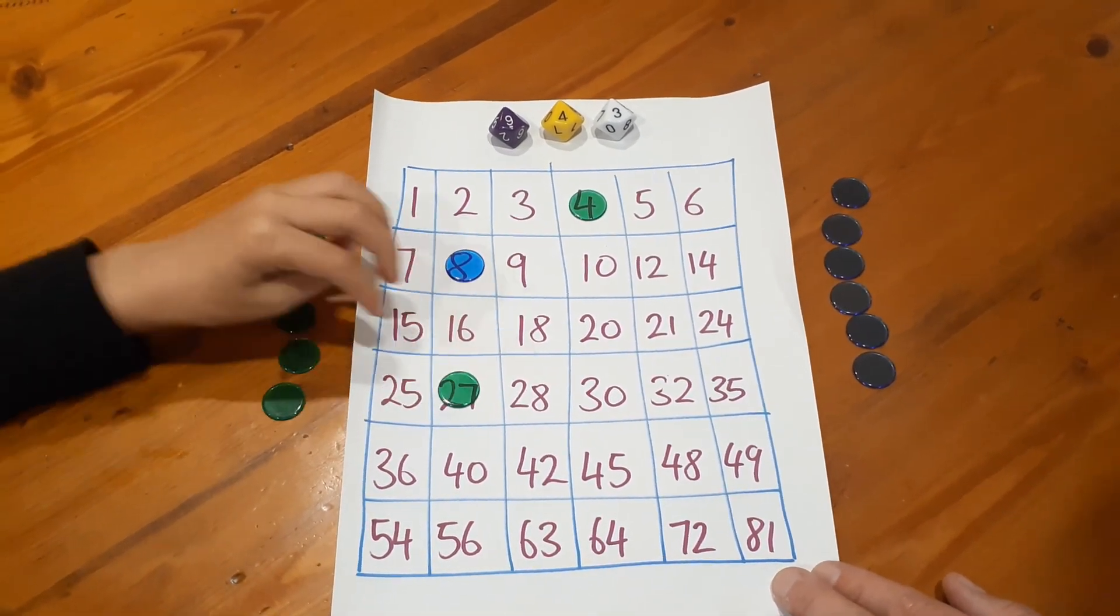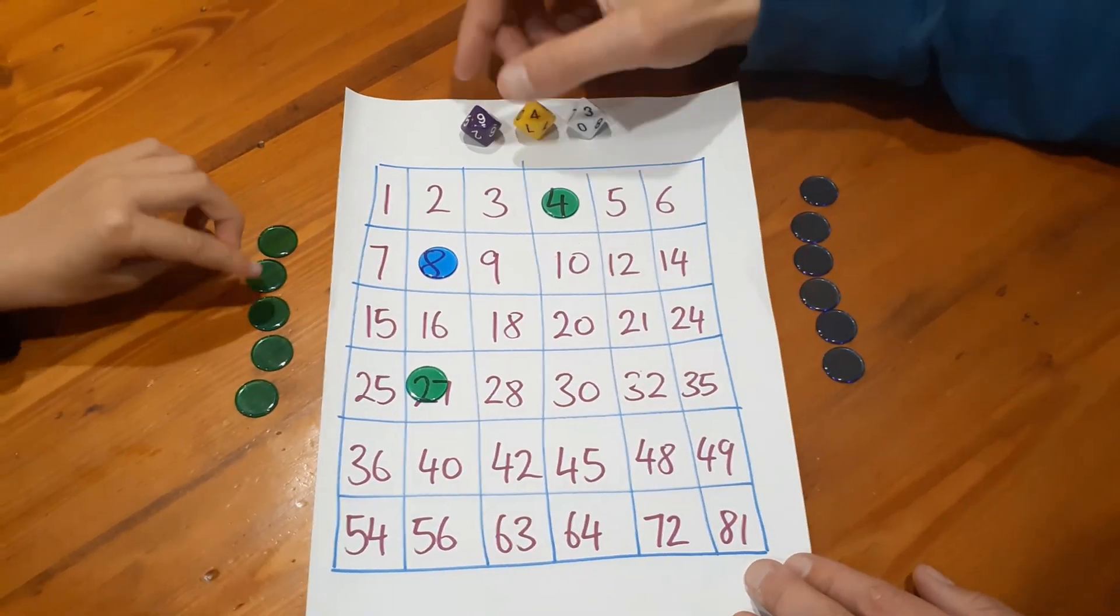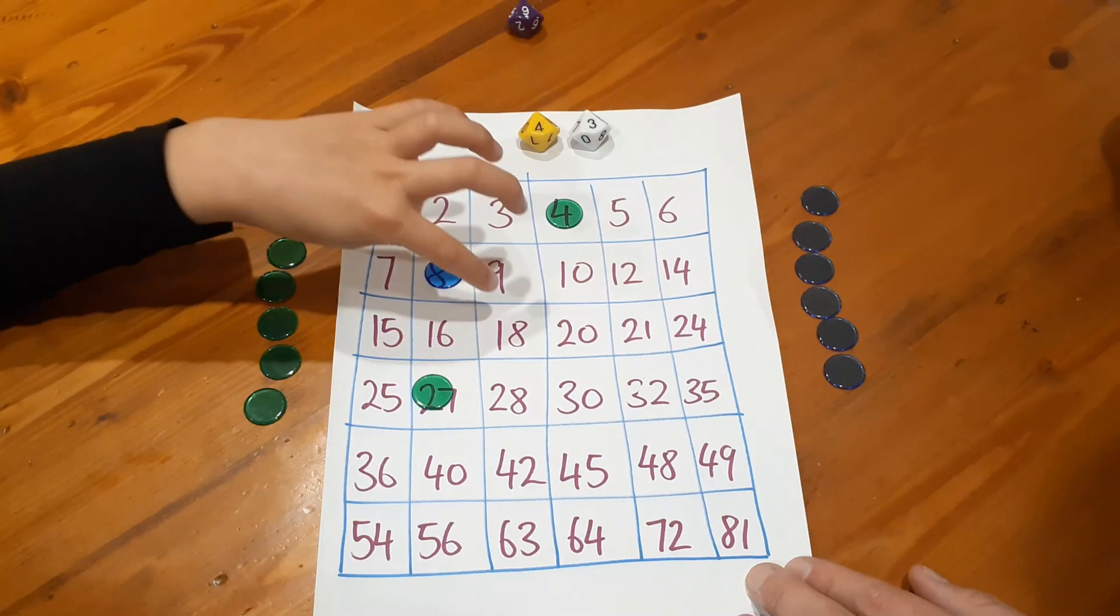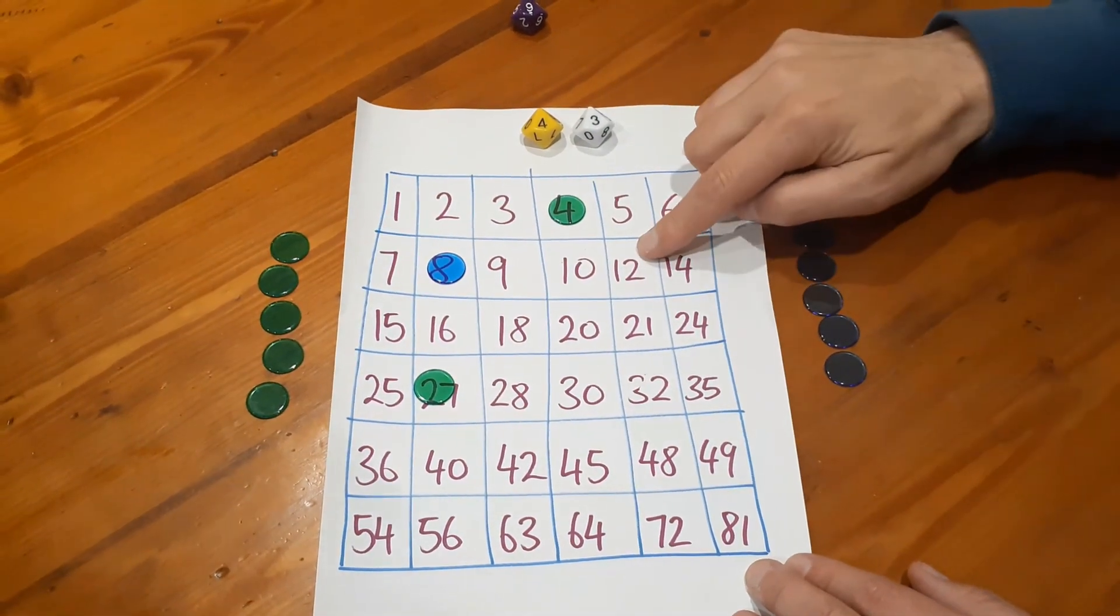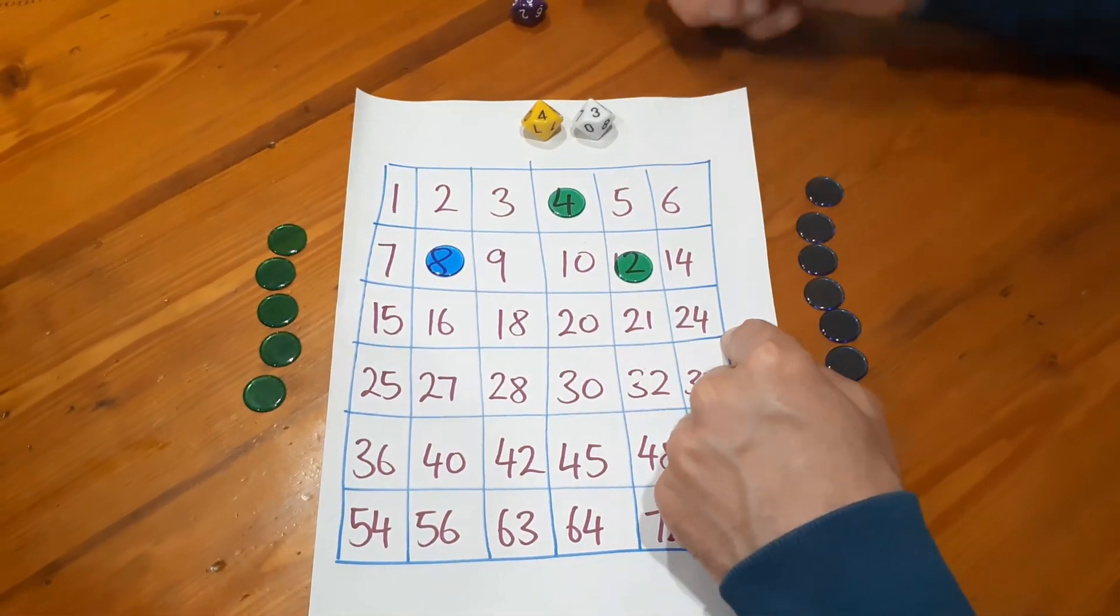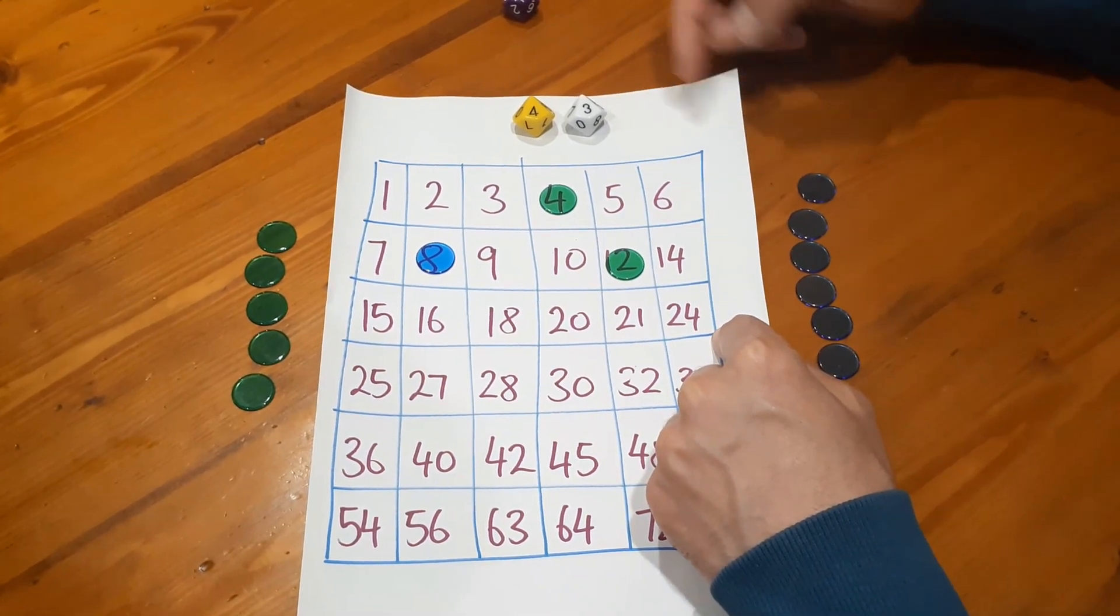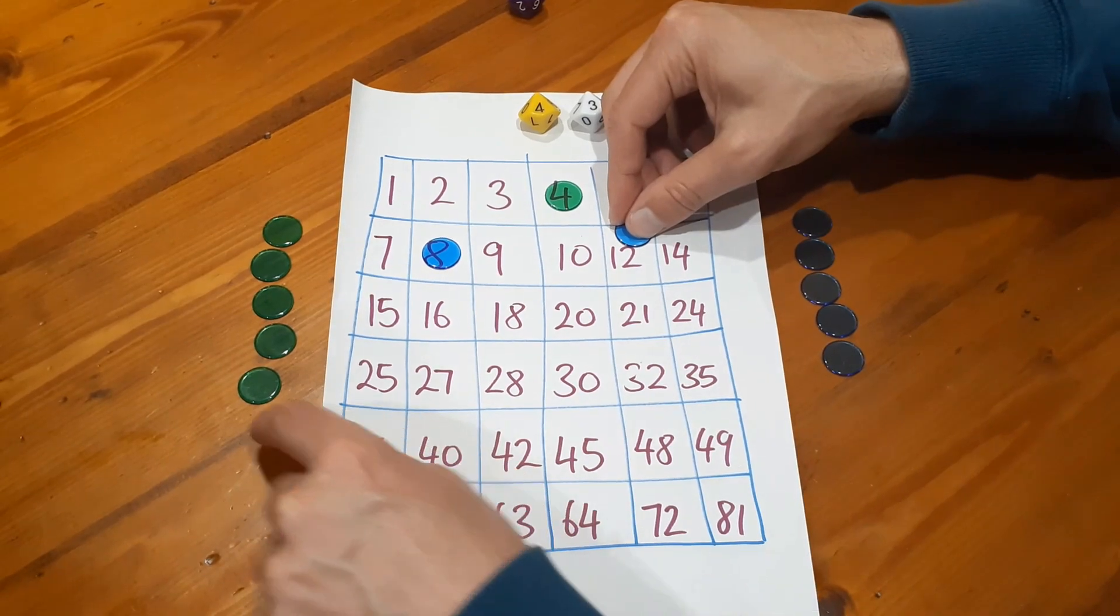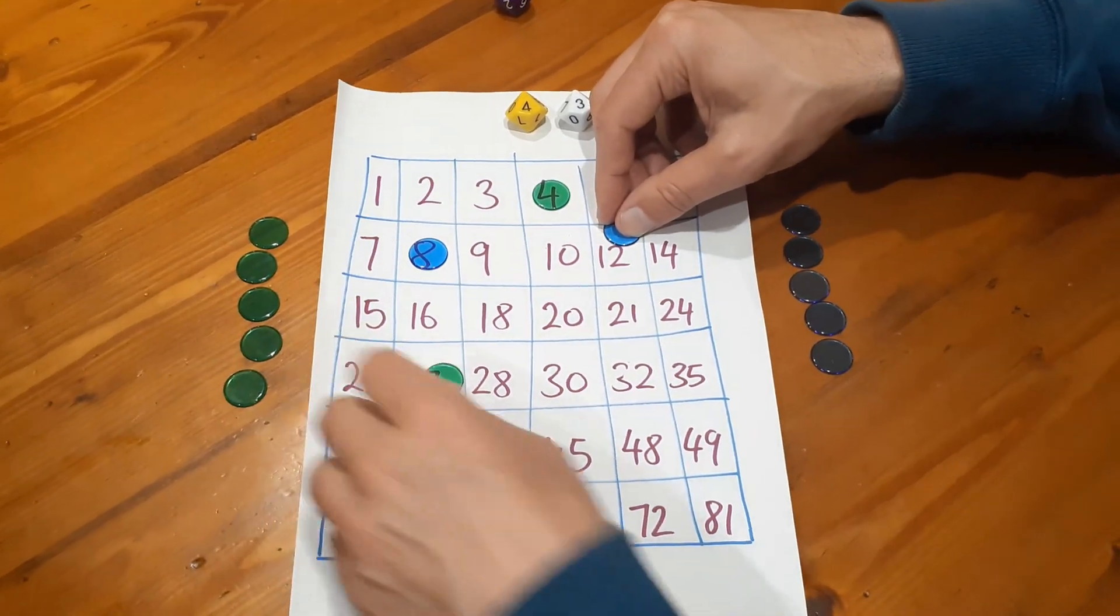Beautiful. Now Nash, this might be a good time to explain one of the rules. Why did you not want to do 3 times 4 is 12? Because there's lots of ways to make 12. Yeah, now if Nash puts a counter in 12 and then I roll and I can make 12, I will be putting my counter there and kicking him out of the house.